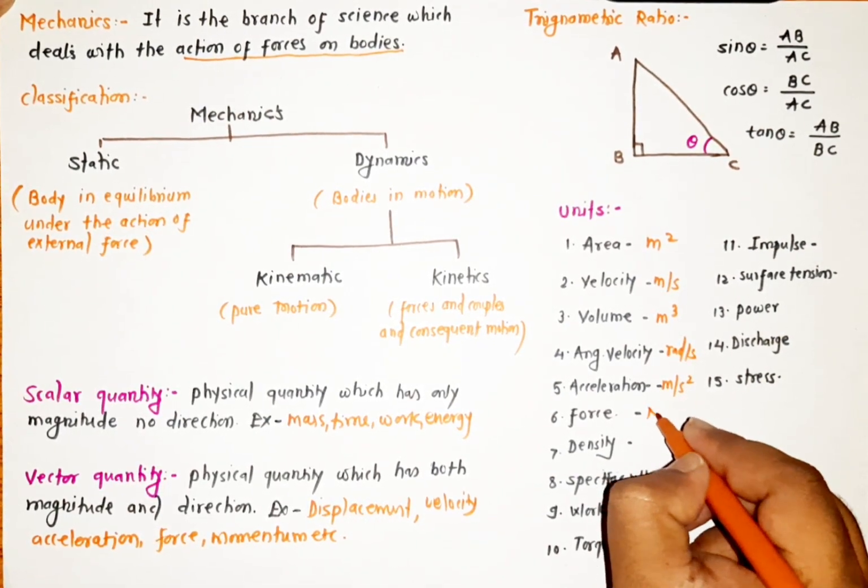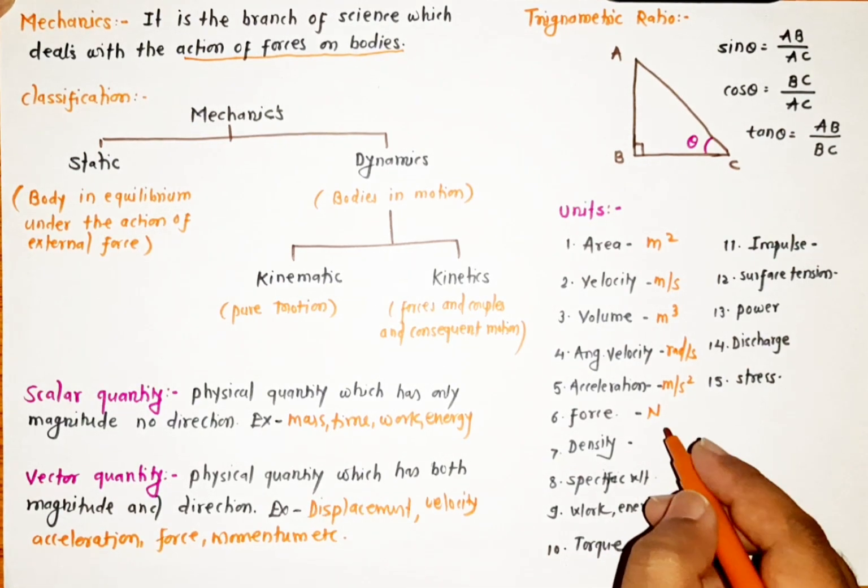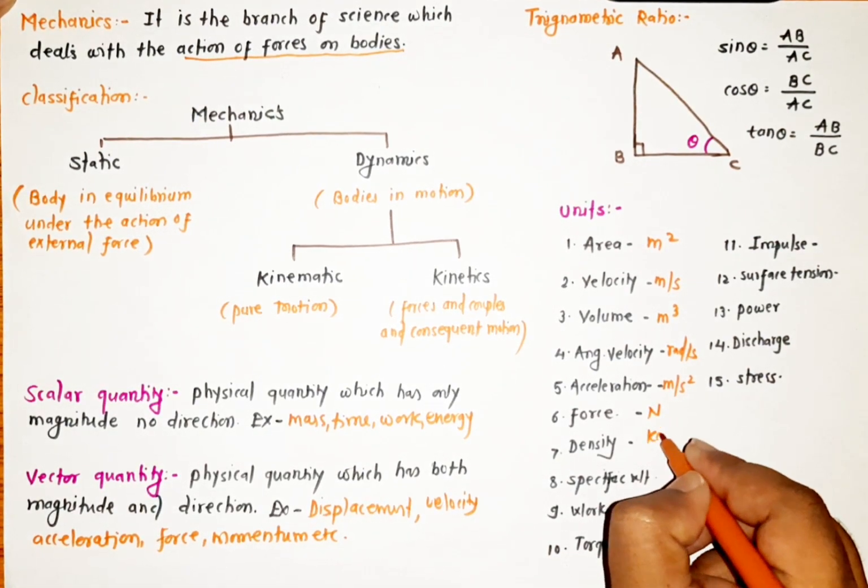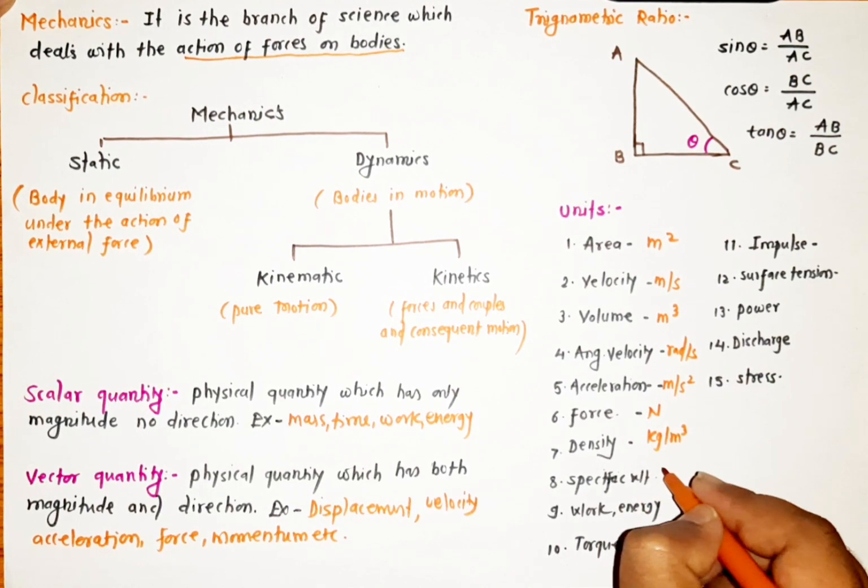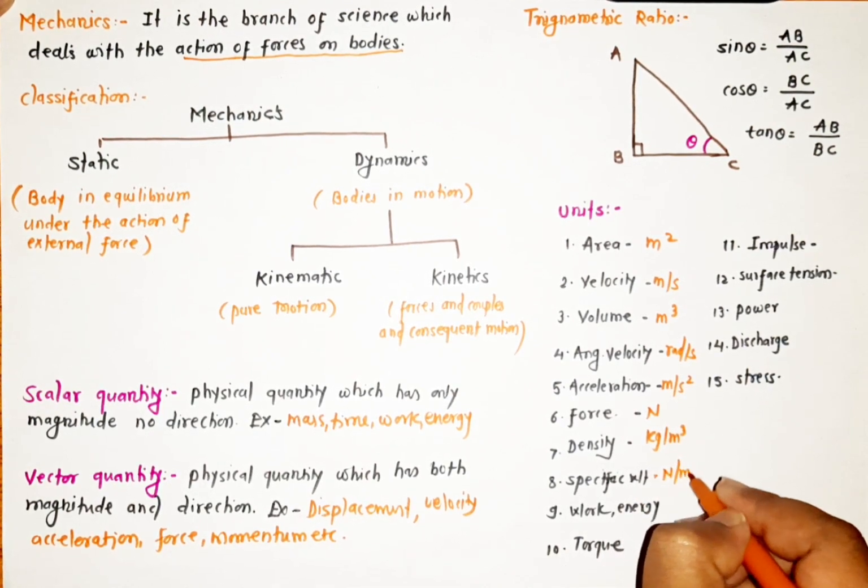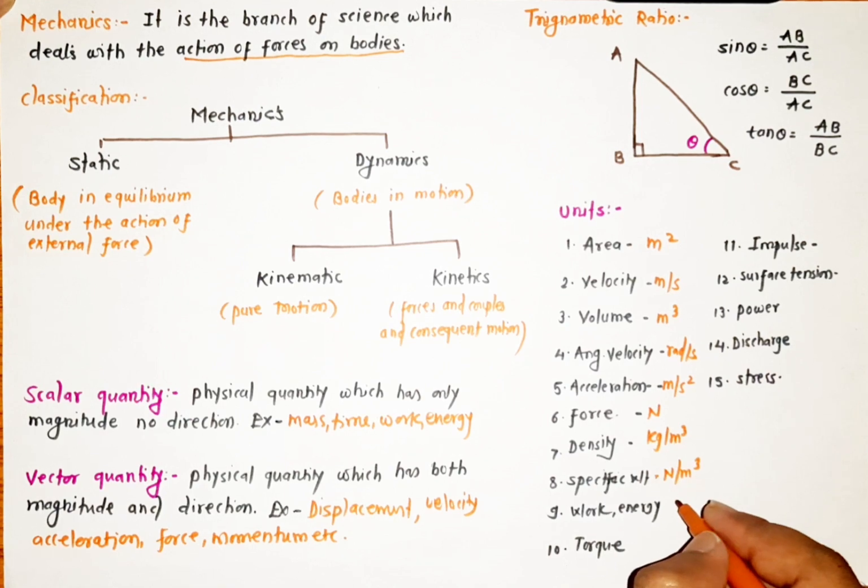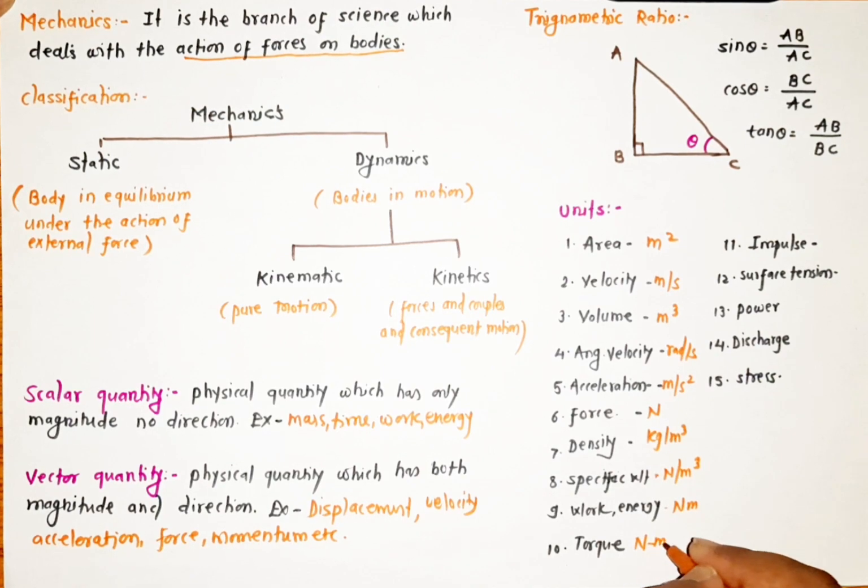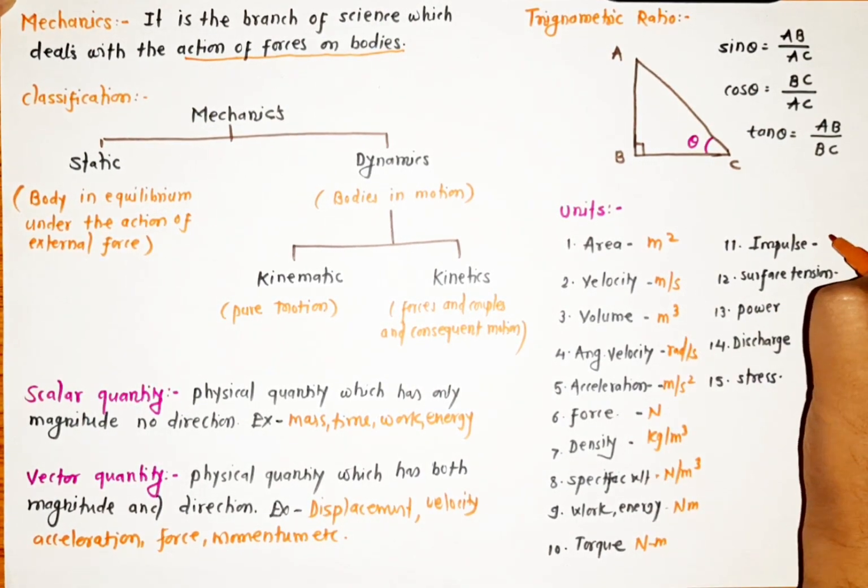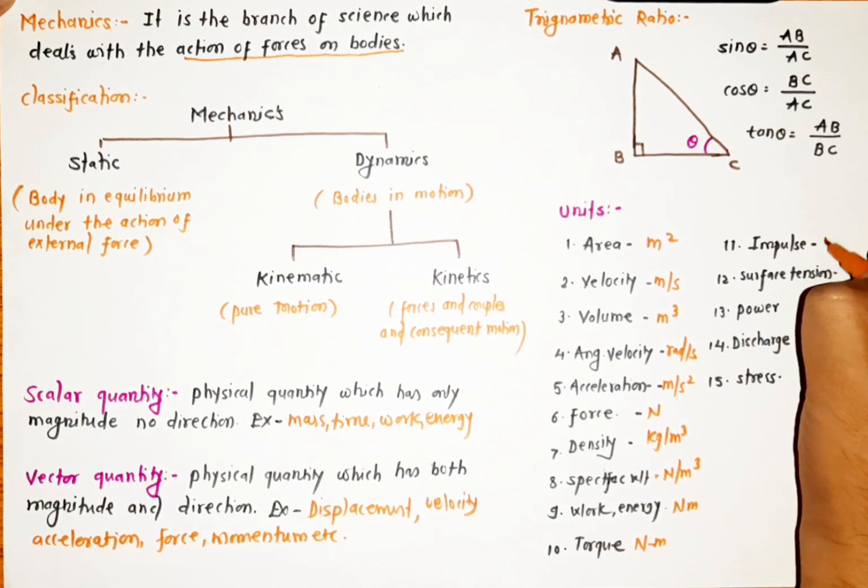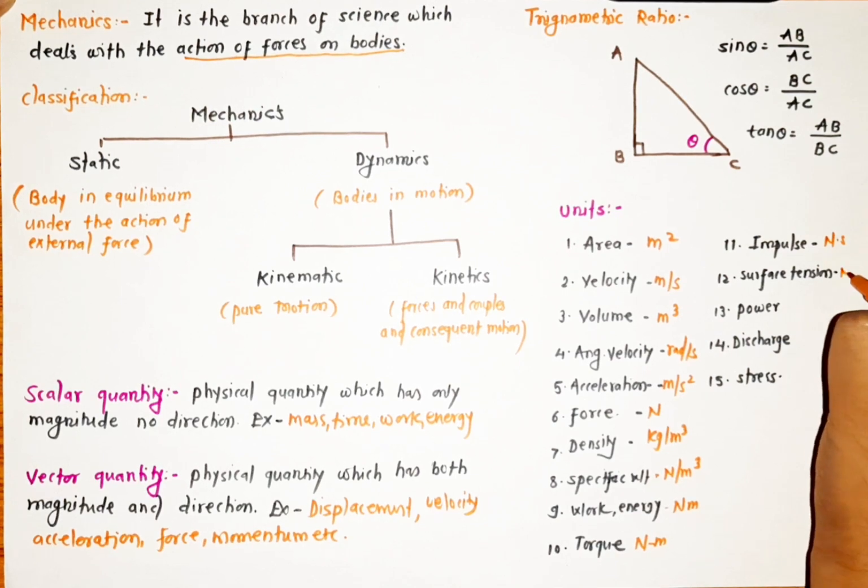Force we express in Newton, density in kg per meter cube, specific weight in Newton per meter cube, work energy in Newton meter, torque in Newton per meter, impulse in Newton per second, and surface tension in Newton per meter.